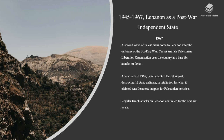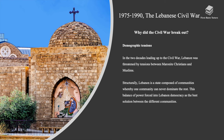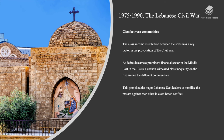Between 1975 and 1990, a civil war in Lebanon broke out. First, there were demographic tensions: in the two decades leading up to the civil war, Lebanon was threatened by tensions between Maronite Christians and Muslims. Structurally, Lebanon is a state composed of communities whereby one community can never dominate the rest, and this balance of power forced Lebanon into democracy as the best solution between different communities. Additionally, the class income distribution between the sects was a key factor — as Beirut became a prominent financial center in the Middle East in the 1960s, Lebanon witnessed rising class inequality among the different communities.